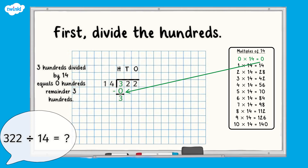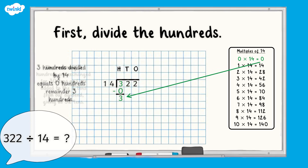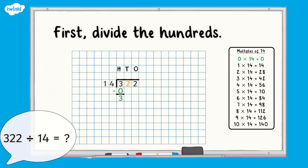We do not need to write a zero in our answer because we don't use leading zeros in whole numbers. We subtract the zero hundreds we have already divided from the three hundreds that we started with, which leaves us with three hundreds. These hundreds are exchanged for 30 tens and are added to the two tens from 322, giving us 32 tens.